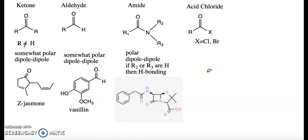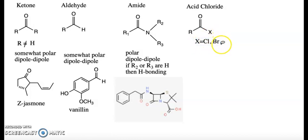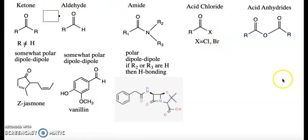I want to mention briefly — not because they're unimportant, but because we don't normally make them to keep them — acid chlorides and acid anhydrides. Acid chlorides have a C=O, an R group, and an X (chlorine or bromine), and are usually made to produce compounds like amides or esters. Acid anhydrides have two carbonyls with an oxygen in the middle and are similarly only used to make other compounds.